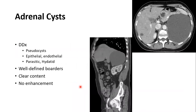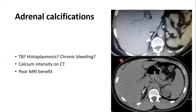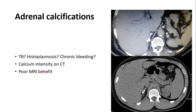Adrenal cysts may be pseudocysts, epithelial, endothelial, or parasitic (e.g., hydatid cysts). Hydatid cysts show small daughter cysts within a larger cyst, well-defined borders, clear fluid content, and no enhancement after contrast. Adrenal calcifications may be seen incidentally, or in tuberculosis, histoplasmosis, or chronic bleeding — they appear calcium-dense on CT. MRI is poorly helpful for characterizing calcifications.